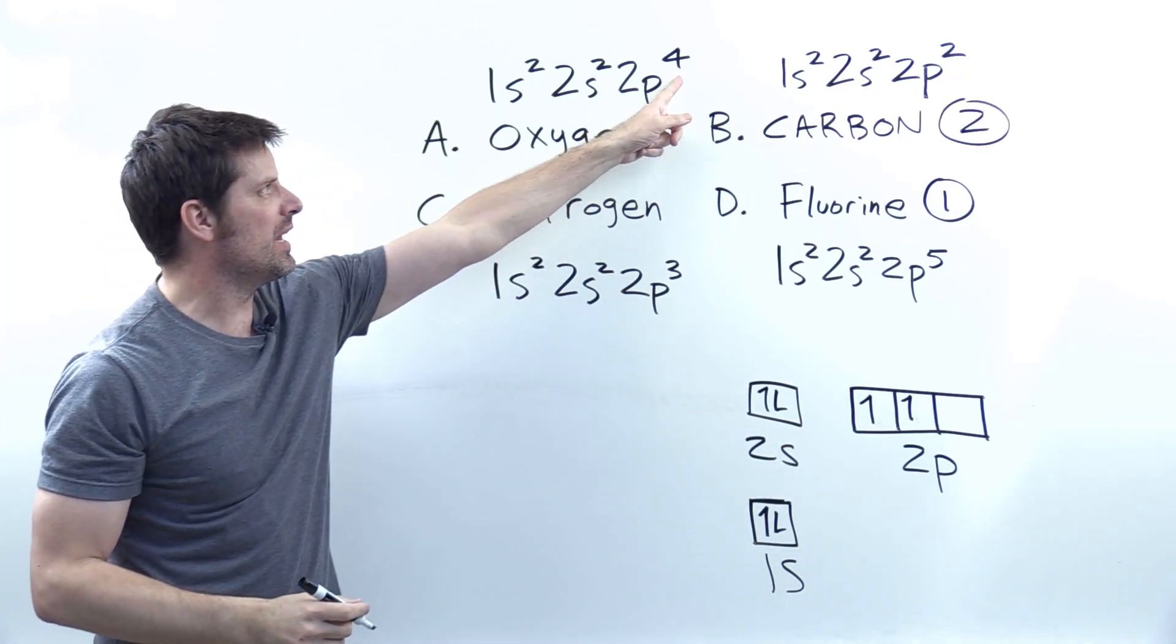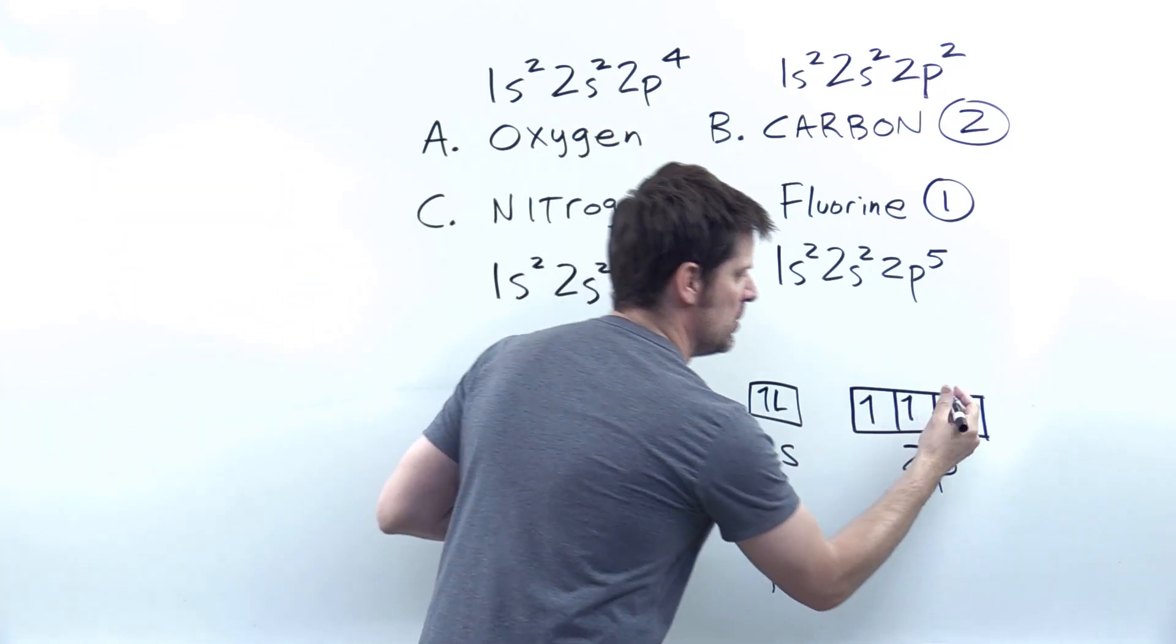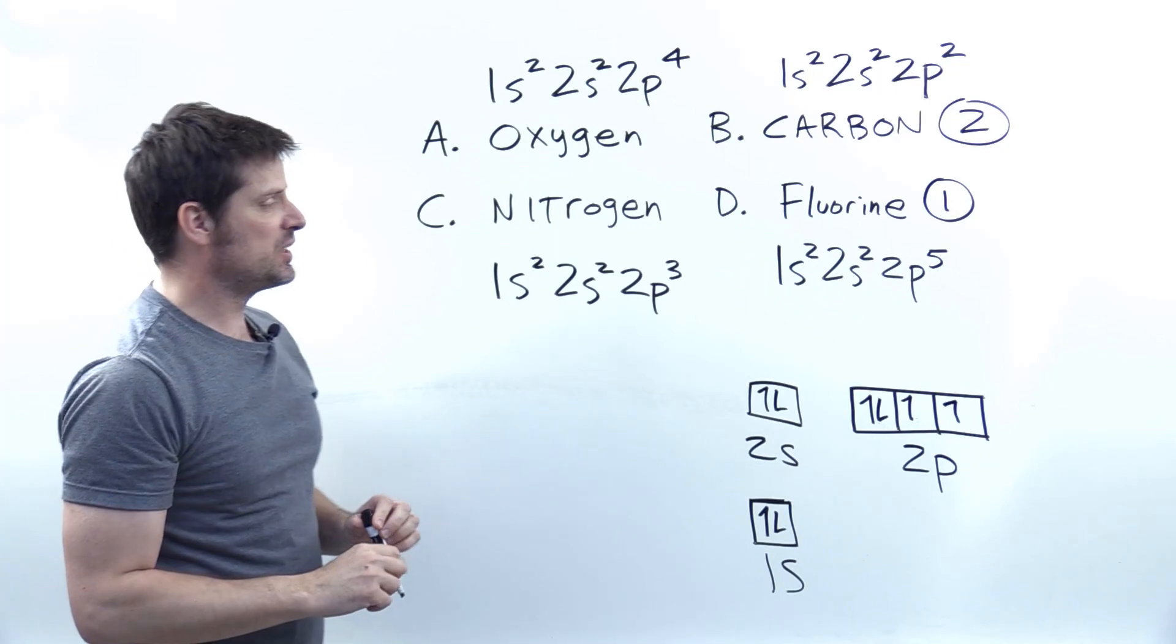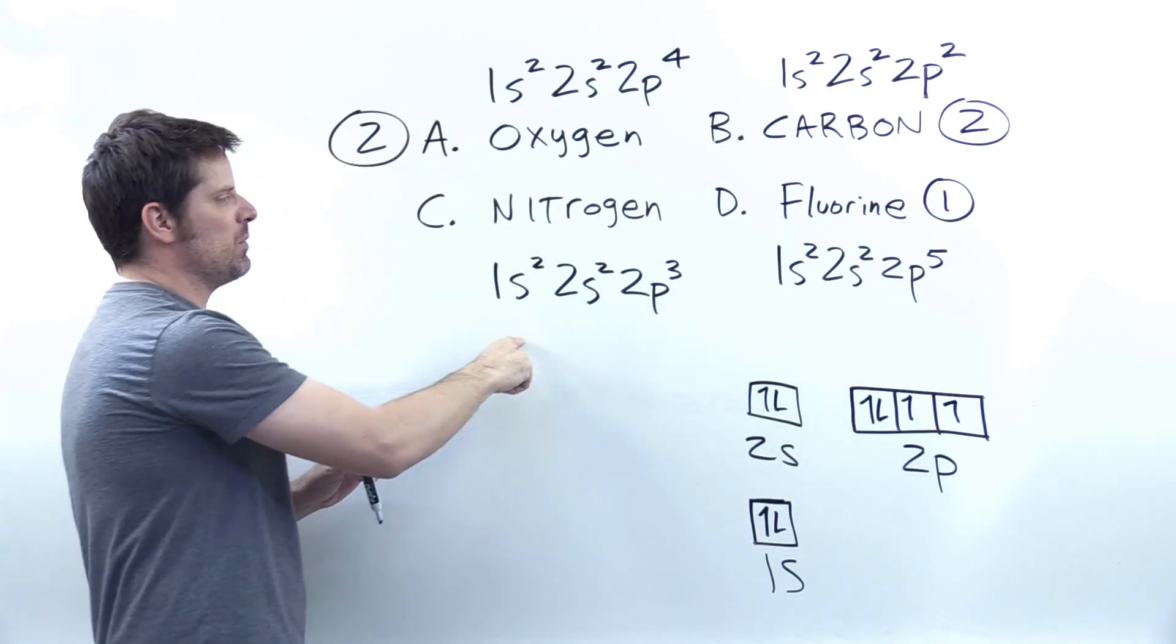And what of oxygen with its four electrons in its 2p shell? Similar to fluorine, I lay them all down, one, two, three, and then four. Oxygen therefore has two unpaired electrons represented by those arrows there.